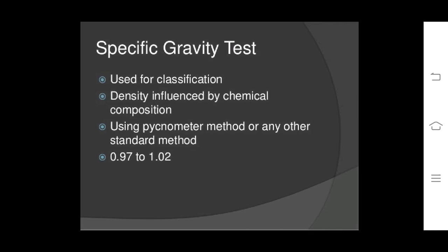Specific gravity test: it is used for the classification of bitumen. Density is influenced by chemical composition. Using the pycnometer method or any other standard method, the specific gravity of bitumen is calculated; it ranges between 0.97 to 1.02.